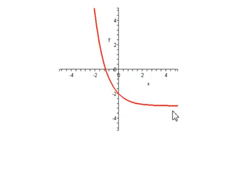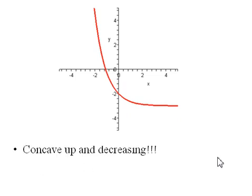This graph opens upwards as well, so this is still concave up, which means it has an increasing rate of change. But as we go from left to right, it's decreasing. So it's concave up and decreasing. That means it's decreasing, but it does have an increasing rate of change because the rate of change is becoming more positive.